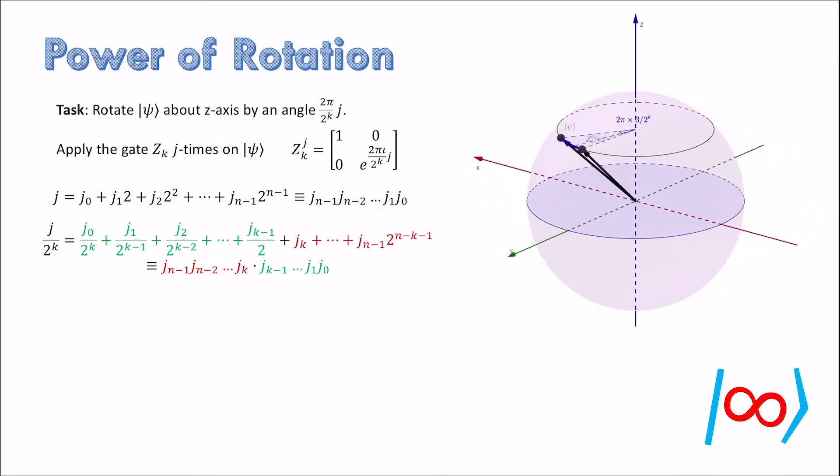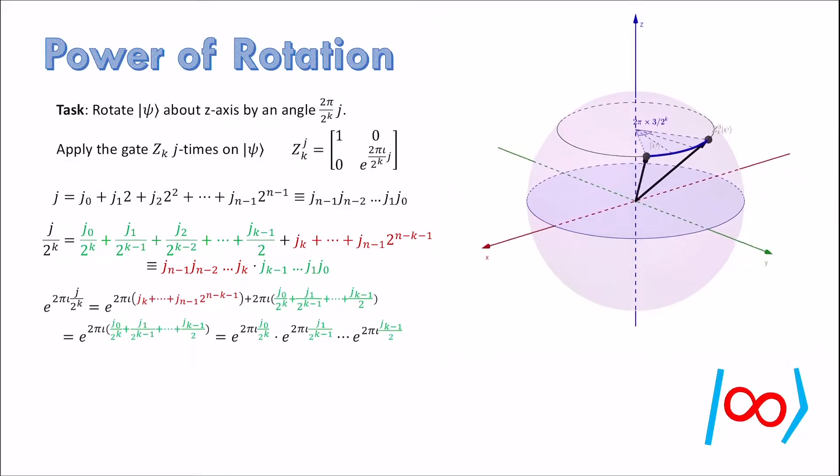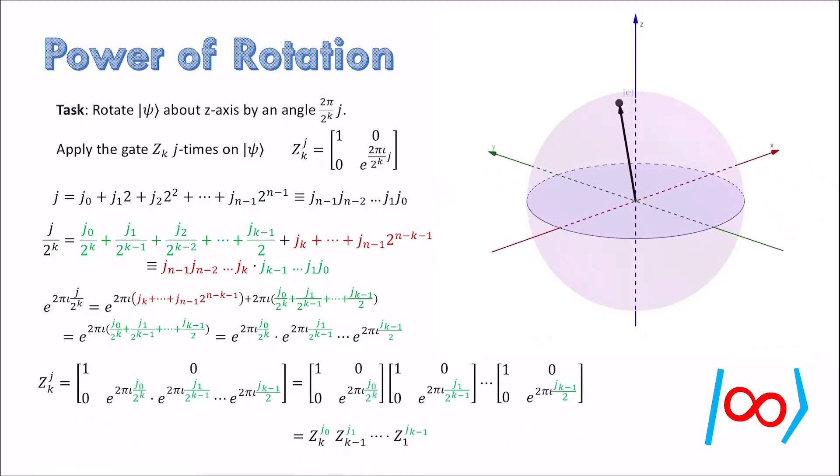The advantage of separating the fractional and integral parts is that when we consider e power 2 pi i j by 2 power k, the integral part corresponds to e power integer multiple of 2 pi i which is 1. In turn, the resulting expression can be written as product of k factors. This implies that Z_k power j can be obtained by only k rotations, but they all correspond to different angles and they depend on the bits of j.